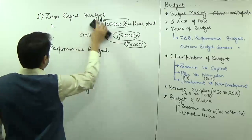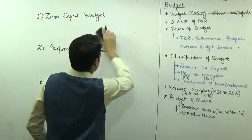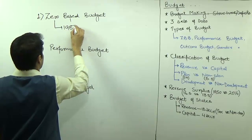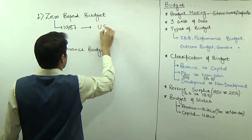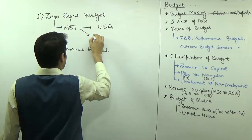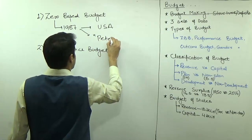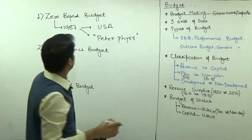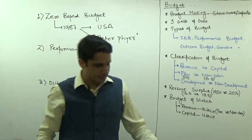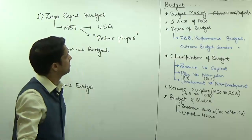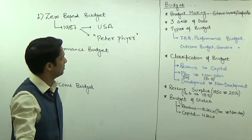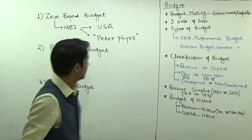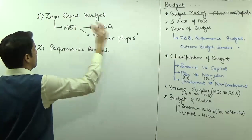Zero based budgeting started in India in 1987. We borrowed this concept from the USA. The concept was given by Peter Pyhrr — a very famous person. So every year, annually, you have to justify your particular program. That is what zero based budgeting is.